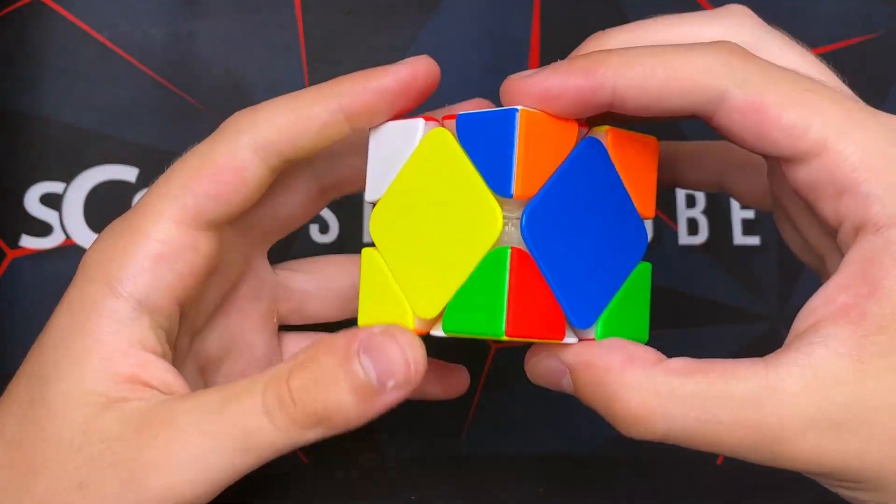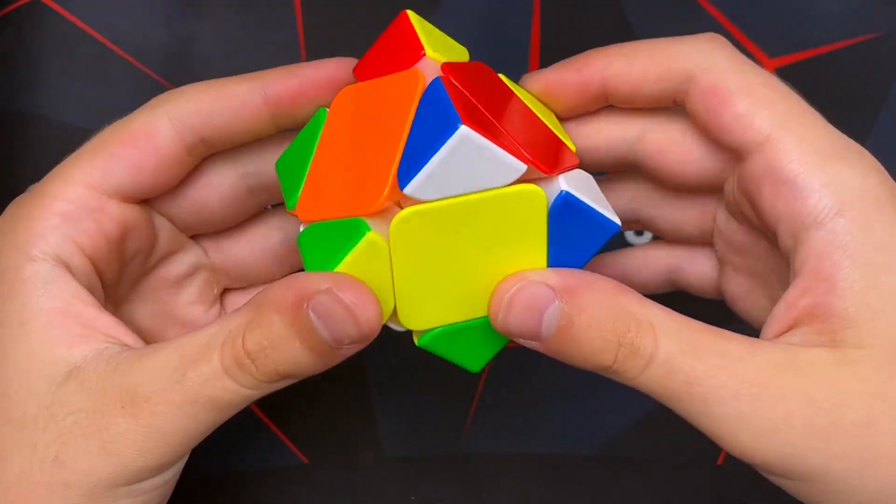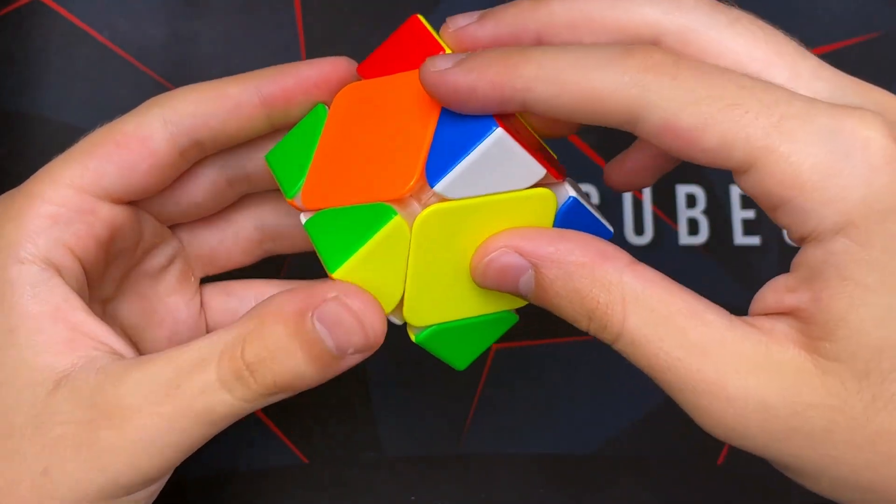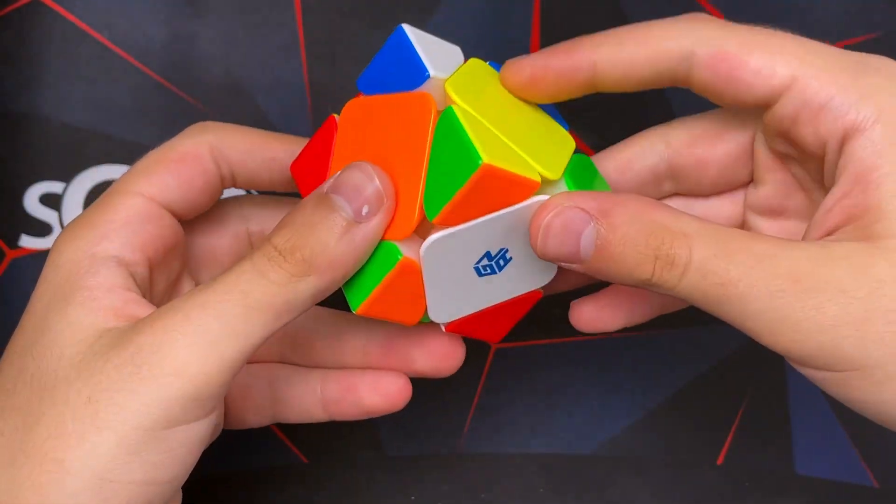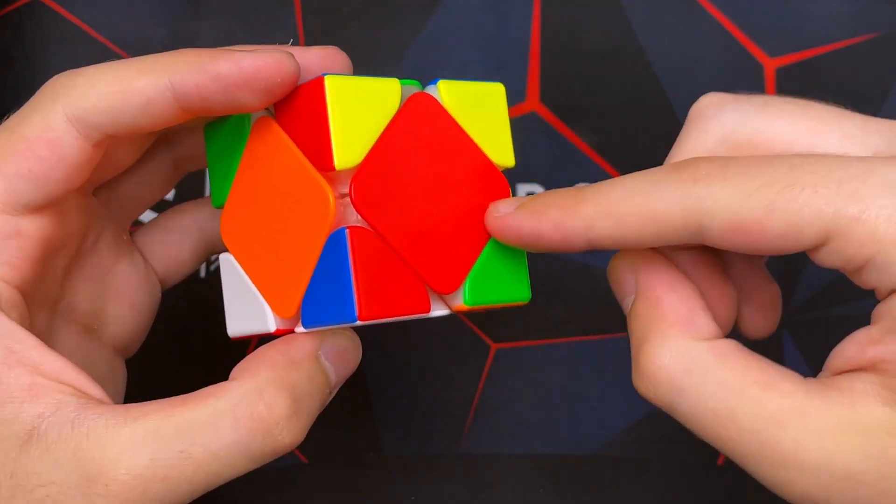To start, you want to make one layer. To do this, go on the white side and find a corner, then put it in. This one can go in like this. Now it matters what colors are on the side here because there is no fixed center. We need to solve the colors properly.